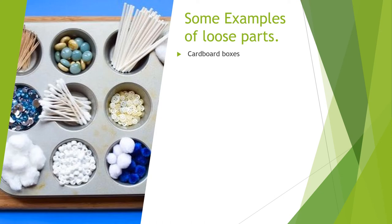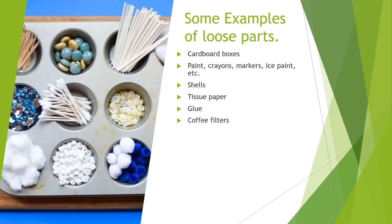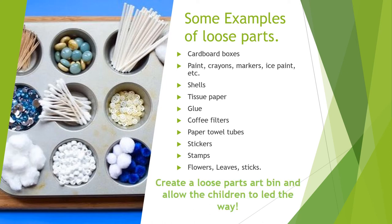Some loose parts examples include: cardboard boxes, paint, crayons, markers, ice cube paint, shells, tissue paper, glue, coffee filters, paper towel tubes, stickers, stamps, flowers, leaves, and sticks. Take some time to go around your house and see what loose parts you might have, or take the children on a walk outside to find natural loose parts.